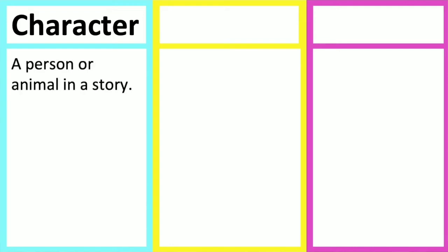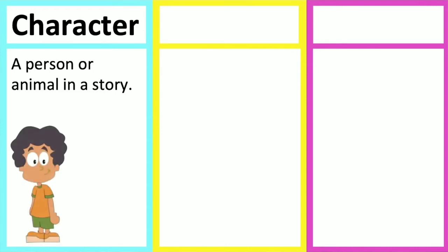A character is a person or animal in a story. The characters in a story are usually described well so the reader can visualize what they look like and how they carry out actions. For example, a boy is an example of a character, and a dog is also an example of a character.